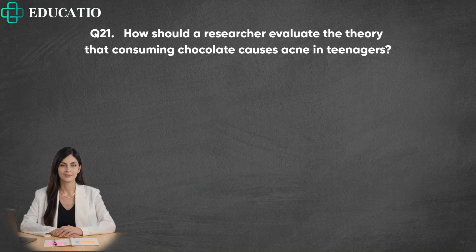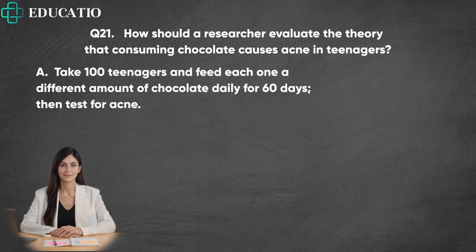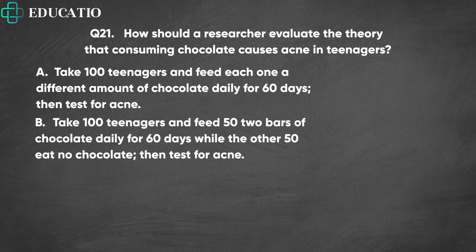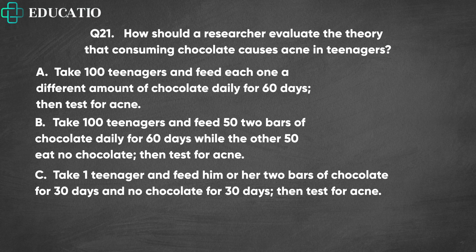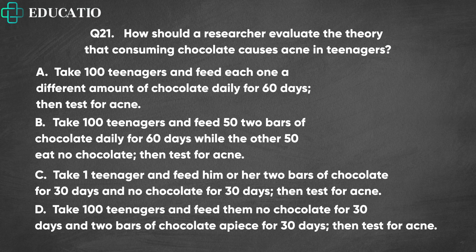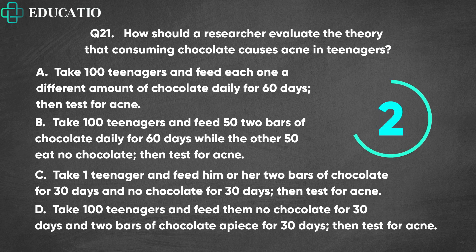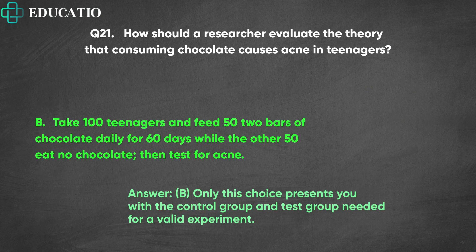Question 21. How should a researcher evaluate the theory that consuming chocolate causes acne in teenagers? A. Take 100 teenagers and feed each one a different amount of chocolate daily for 60 days, then test for acne. B. Take 100 teenagers and feed 50 bars of chocolate daily for 60 days while the other 50 eat no chocolate, then test for acne. C. Take one teenager and feed him or her two bars of chocolate for 30 days and no chocolate for 30 days, then test for acne. D. Take 100 teenagers and feed them no chocolate for 30 days and two bars of chocolate each for 30 days, then test for acne. Answer: B. Only this choice presents you with the control group and test group needed for a valid experiment.